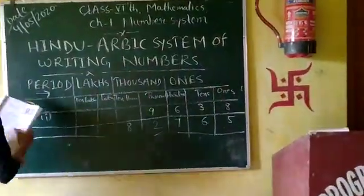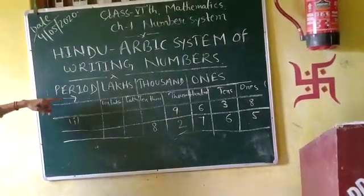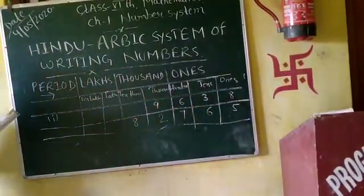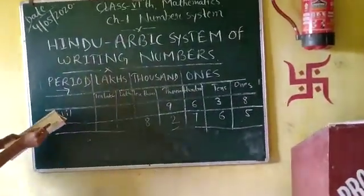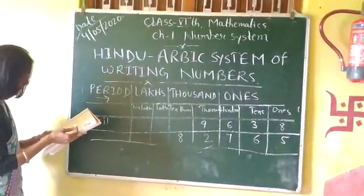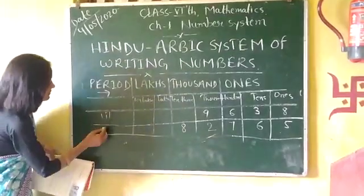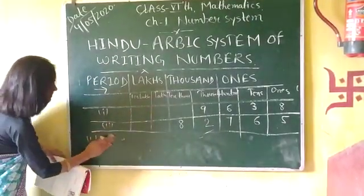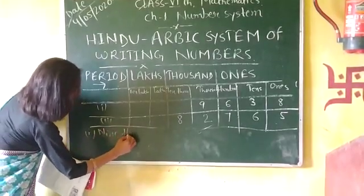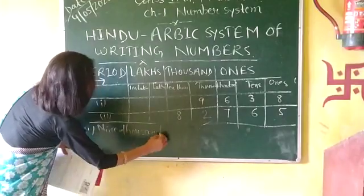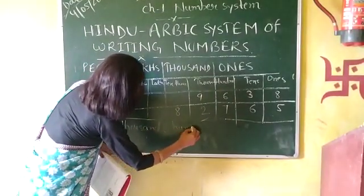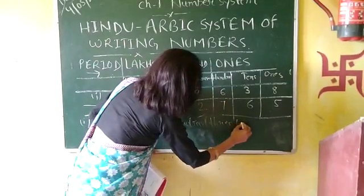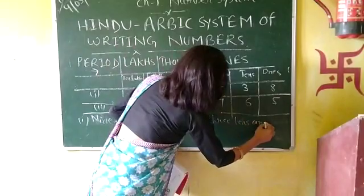Here you are seeing that 8 is at the ones place, 3 is at the tens place, 6 is at the hundreds place, and 9 is at the thousands place. Here we have to write it in numeration. For the first, 9,000, and 600, 3 tens, and 8 ones.